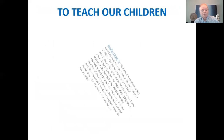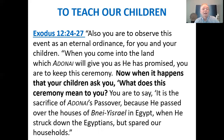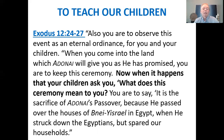We are also to use this memorial to teach our children. Exodus 12 says: 'You are to observe this event as an eternal ordinance for you and your children. When it happens that your children ask you, what does this ceremony mean to you? You are to say, it is the sacrifice of Adonai's Passover, because he passed over the houses of the sons of Israel in Egypt when he struck down the Egyptians but spared our households.' That is why we keep Pesach and Matzot still today — to remember and to teach our children how God freed Israel from slavery.